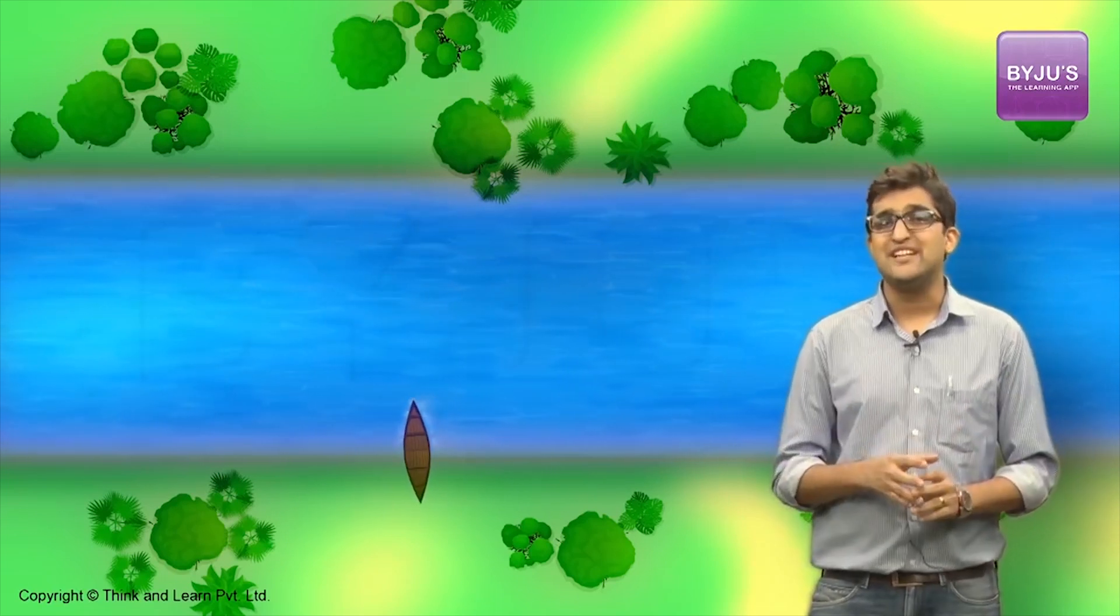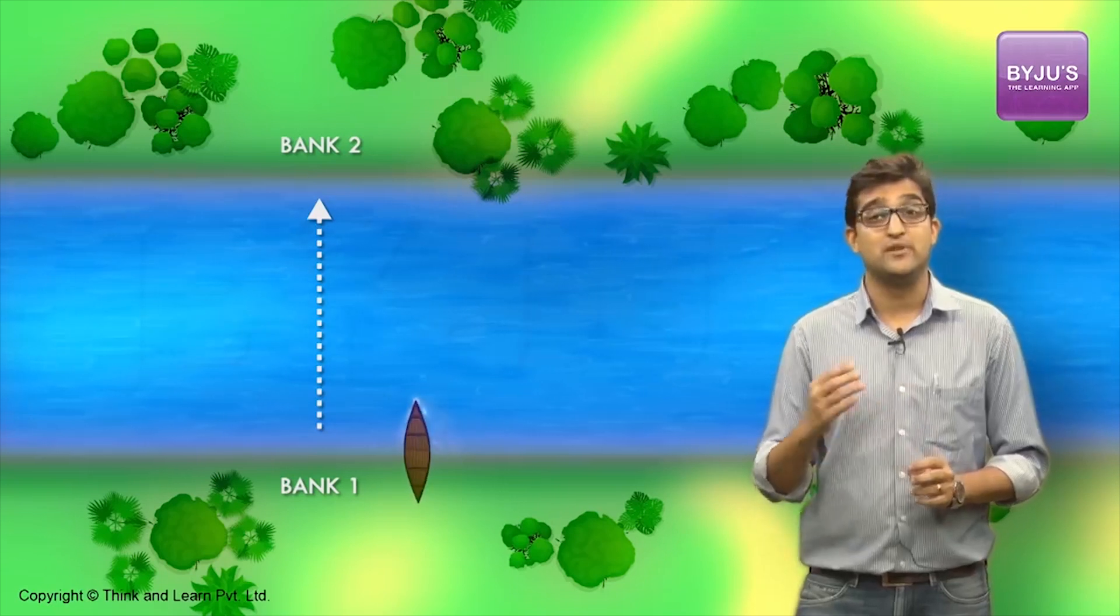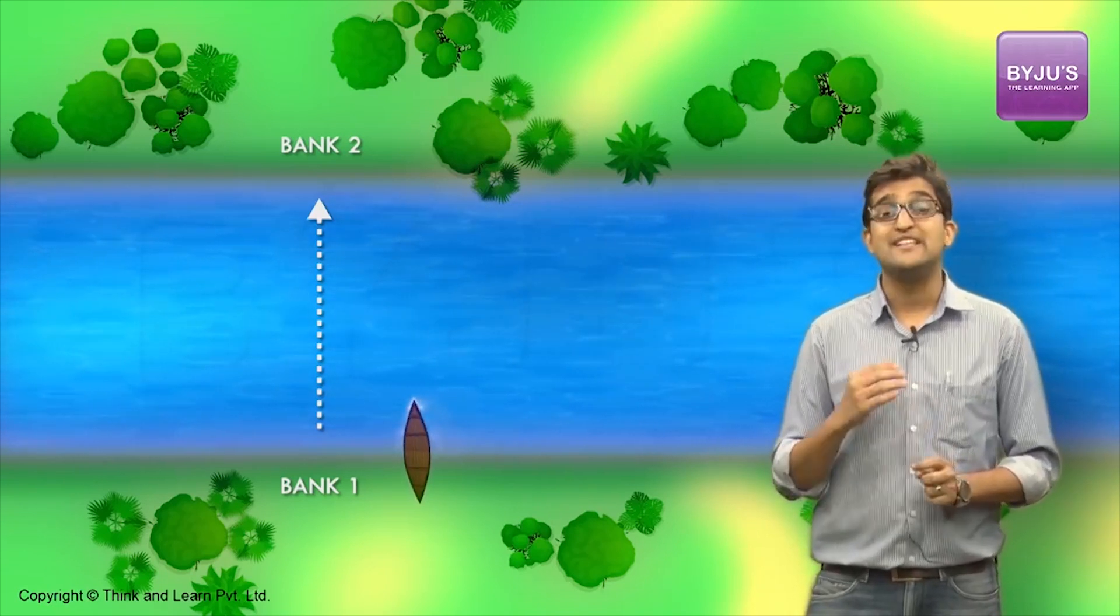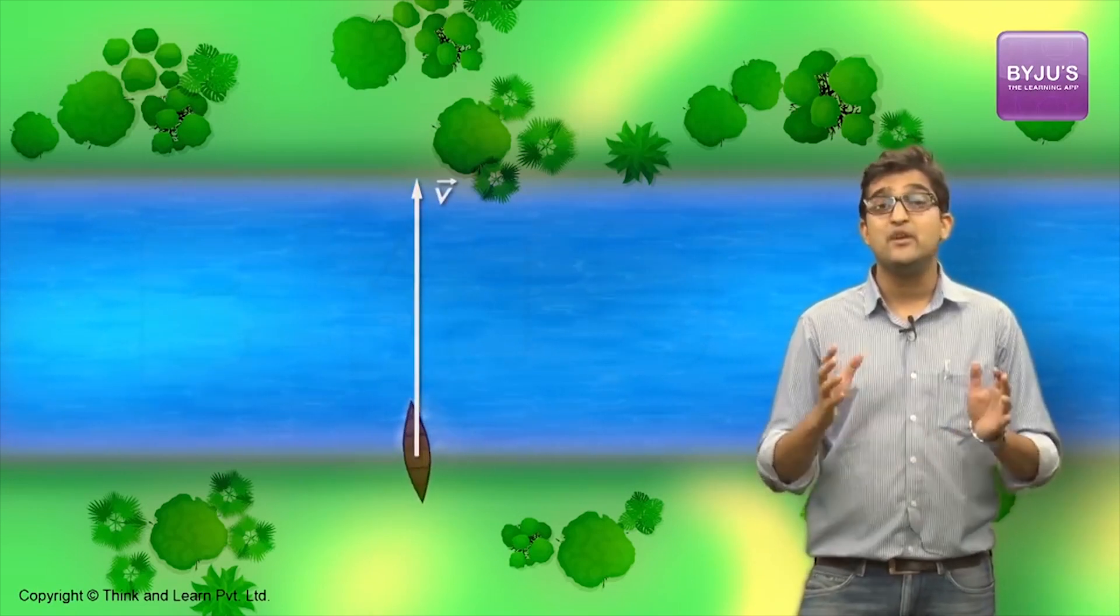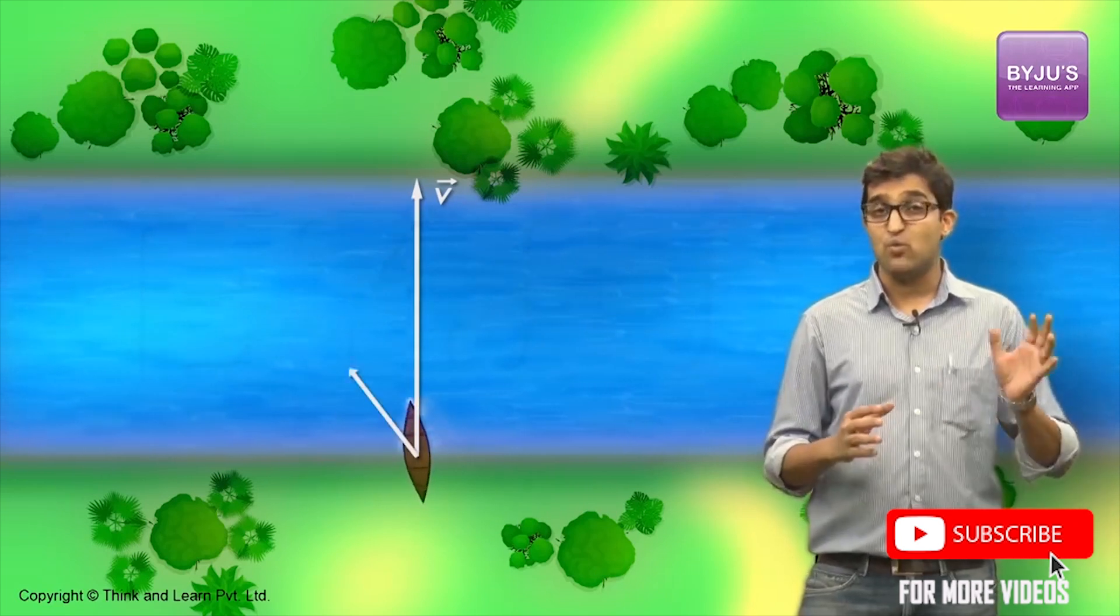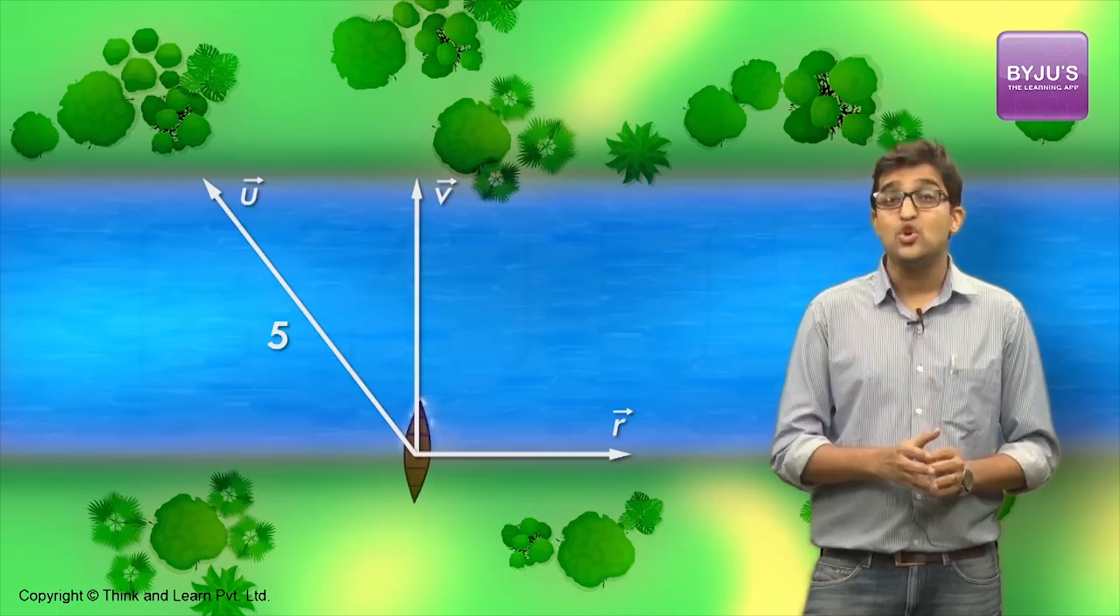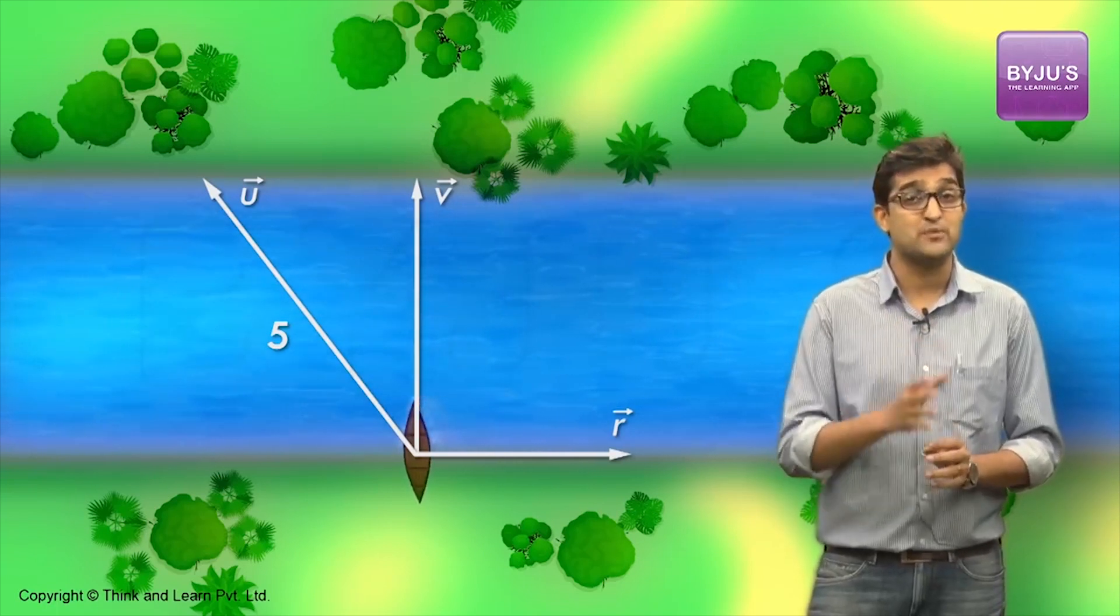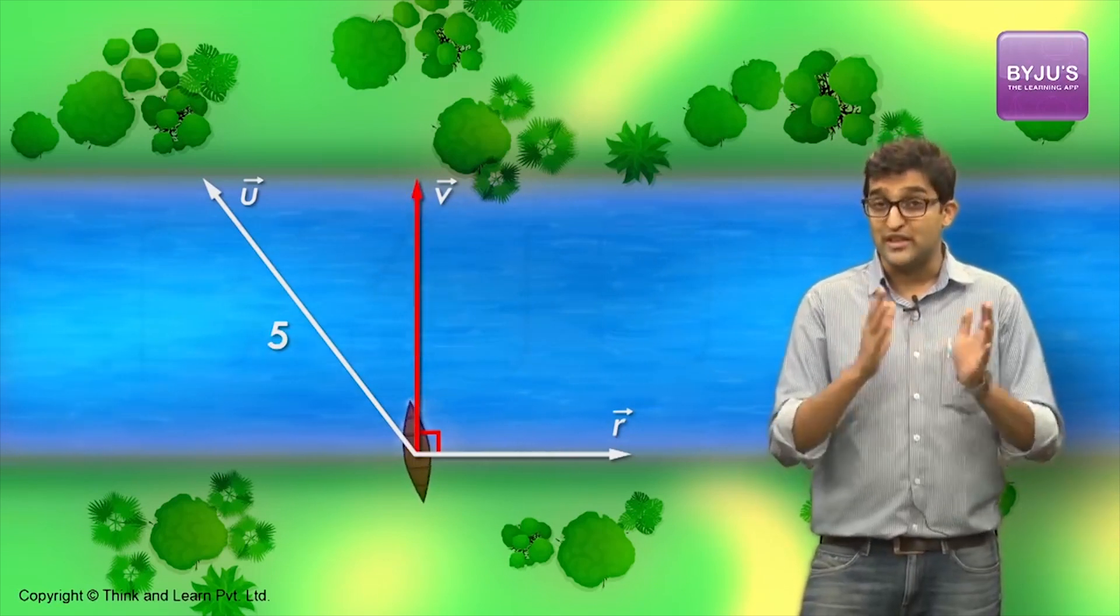The boat wants to cross the river from bank 1 to bank 2 in the shortest possible path, and we are asked to find the speed of the river. Important things you should understand here are that the boat's crossing velocity will be a resultant of its still water speed and the river velocity. And if the boat needs to cross in the shortest possible path, it should cross perpendicular to the direction of flow of the river.